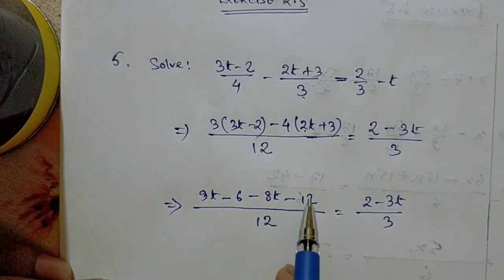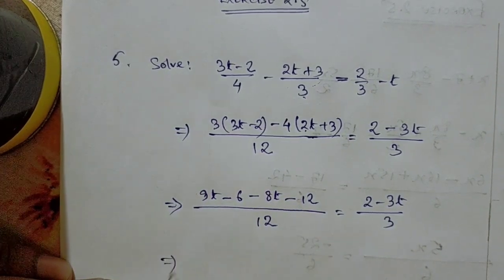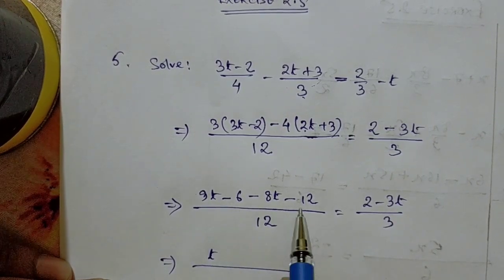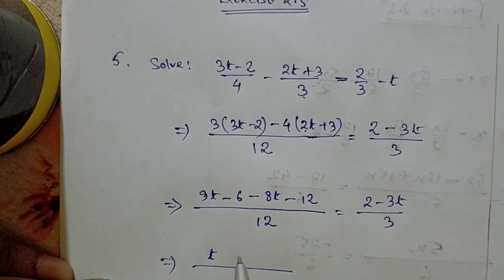We will simplify this part first. 9t minus 8t is t, minus 6 minus 12 will be minus 18. So (t - 18)/12 = (2 - 3t)/3.